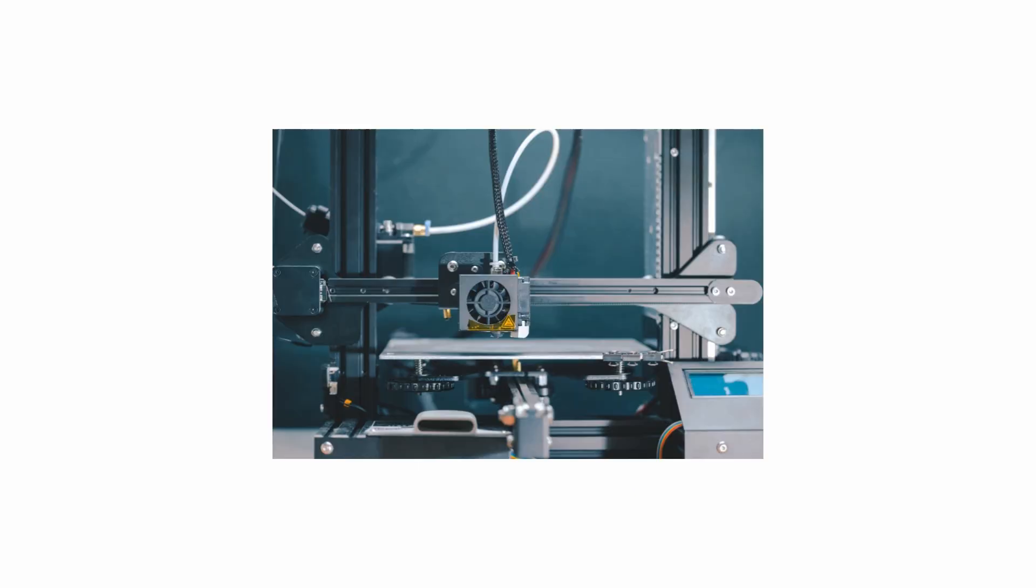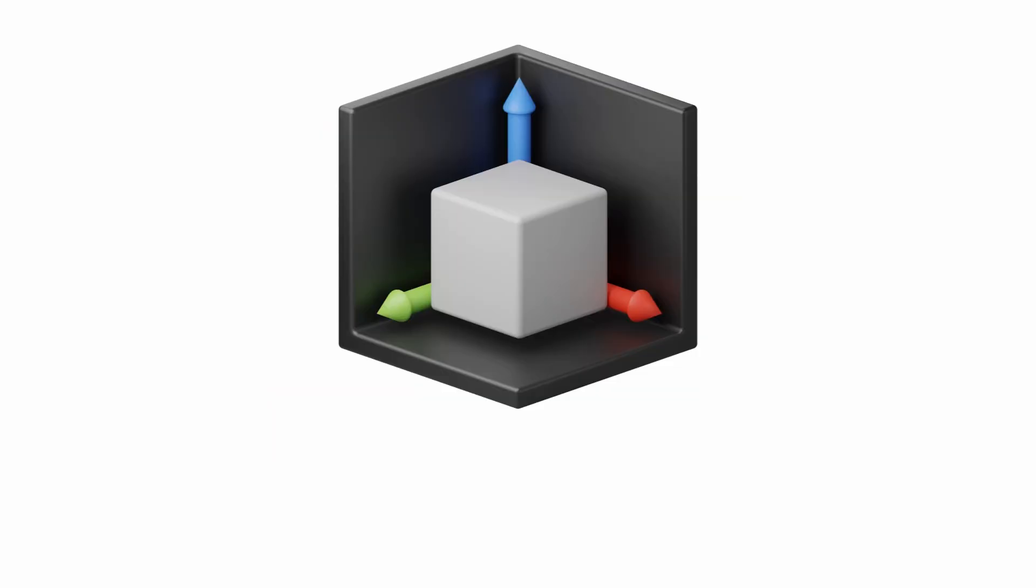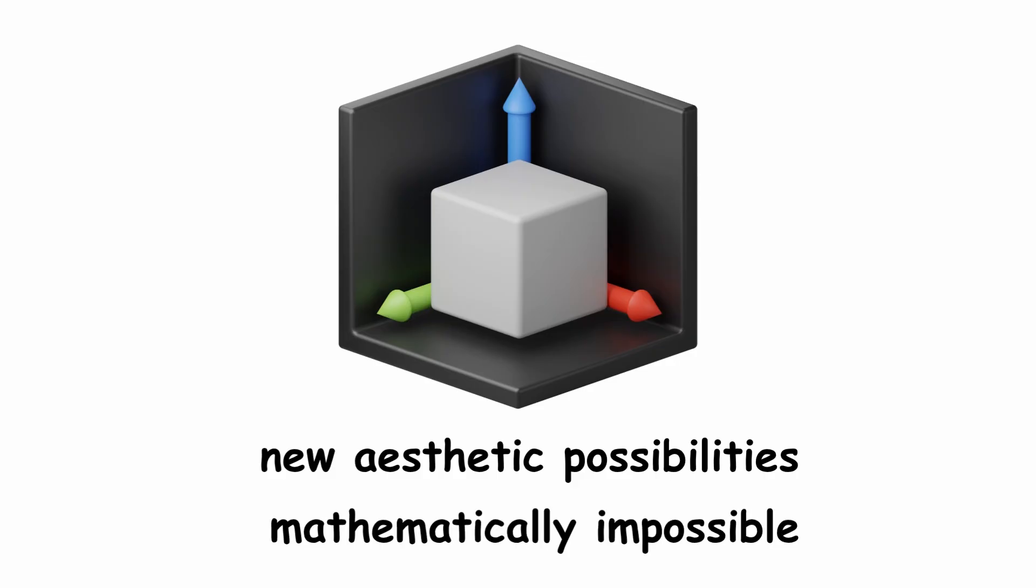Furthermore, many of these shapes cannot be constructed manually, but can be printed. Therefore, parameterization not only opens up new aesthetic possibilities, but also allows for the construction of structures that are mathematically impossible by other means.